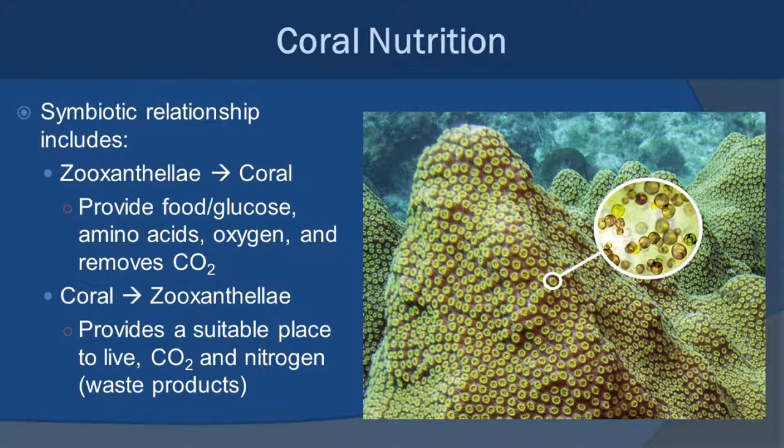The zooxanthellae provide food in the form of glucose through photosynthesis to the coral. They also provide amino acids and oxygen — a byproduct of photosynthesis — and remove CO2, which is also part of photosynthesis. In return, the coral provides a suitable, protected place for the zooxanthellae to live. It also provides an in-house source of carbon dioxide for photosynthesis, and nitrogen, which is really important to growing plants and algae.